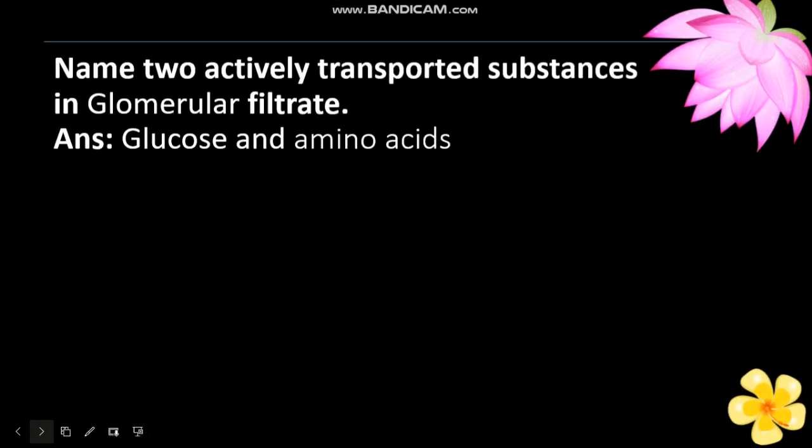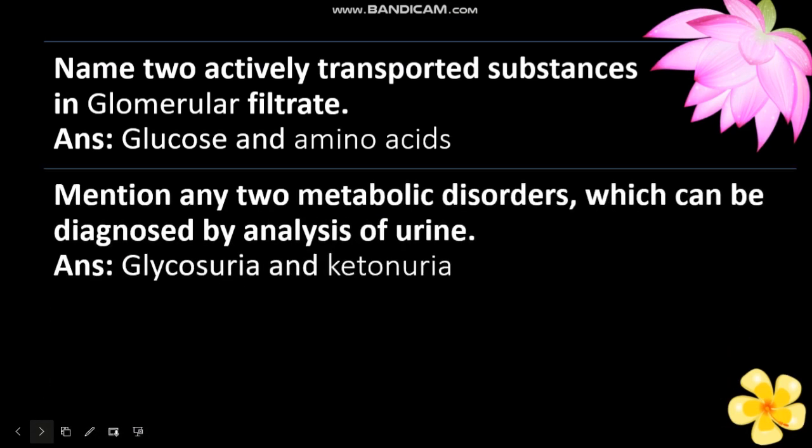Name two actively transported substances in glomerular filtrate. The answer is glucose and amino acids. Mention any two metabolic disorders which can be diagnosed by analysis of urine. The answer is glycosuria and ketonuria.